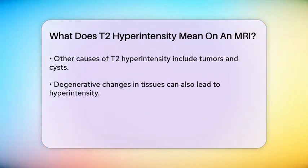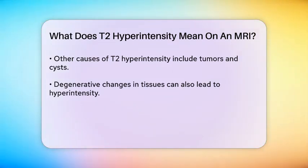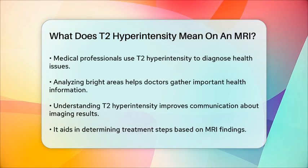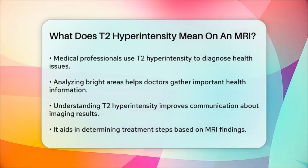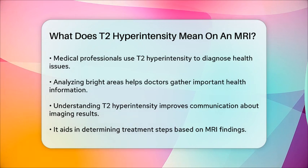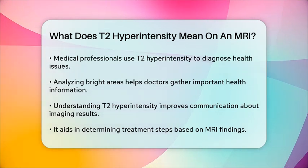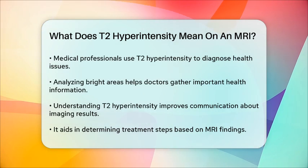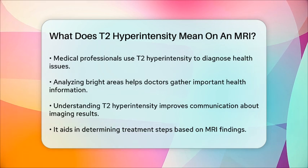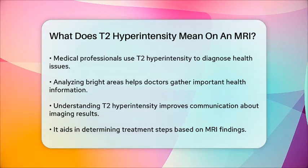Medical professionals use T2 hyperintensity as a diagnostic tool to assess and identify potential issues within the body. By analyzing the patterns and locations of these bright areas, doctors can gather important information about a patient's health and determine the next steps for treatment. In conclusion, T2 hyperintensity on an MRI is a significant indicator that can help in diagnosing various medical conditions by showing areas of increased fluid or changes in tissue characteristics. Understanding this concept can aid in better communication between patients and healthcare providers regarding imaging results and health concerns.